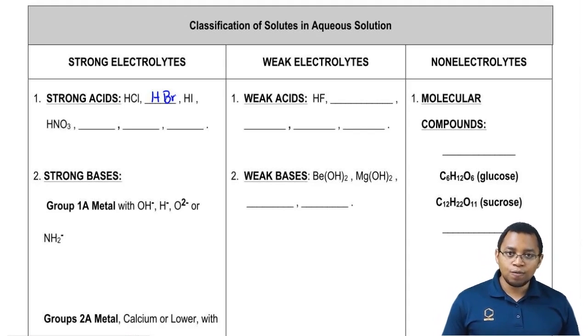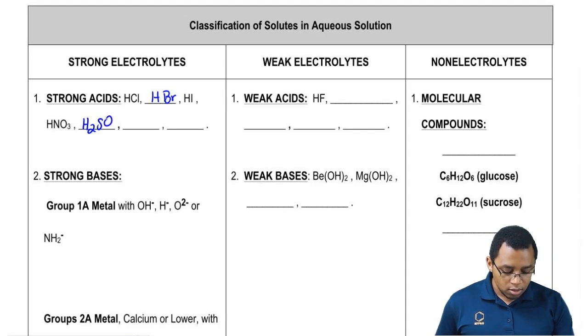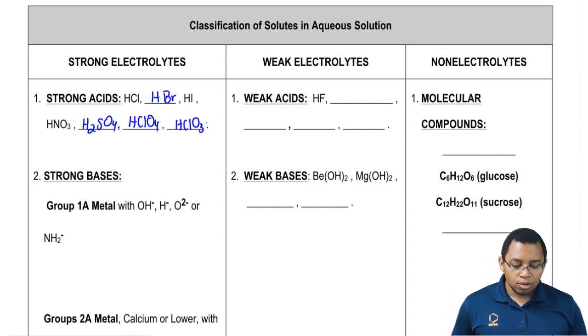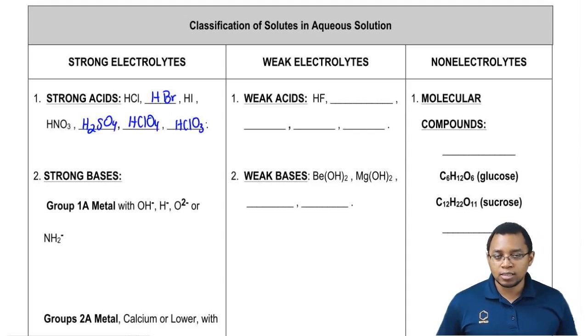HCl, HBr, HI so far, HNO3 is another strong acid. Then the last three will be H2SO4, HClO4, and HClO3. Those are considered your seven major types of strong acids.